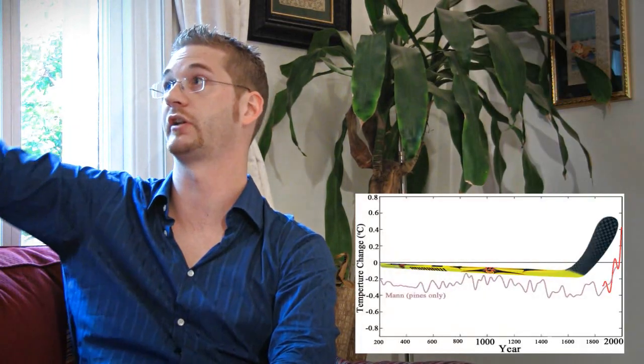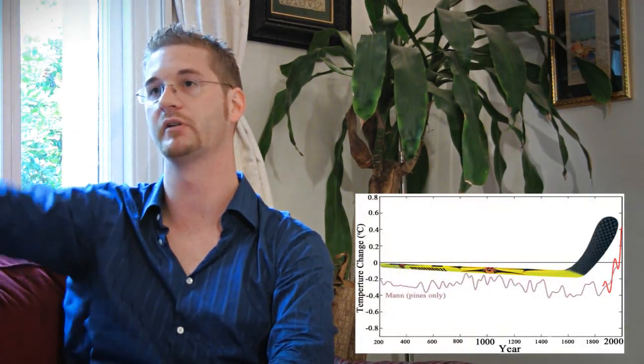The IPCC are the intergovernmental panel and they release reports every four or five years. These are so-called thousands of scientists telling us about global warming and they have something called the hockey stick. The hockey stick shows cool temperatures flatlining for a thousand years and then it goes like the edge of the hockey stick straight up. This is the catastrophic global warming going on.